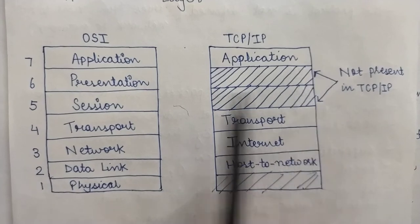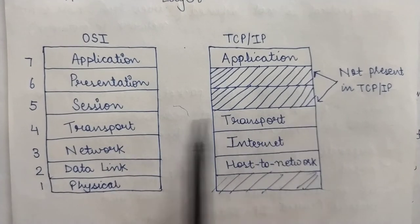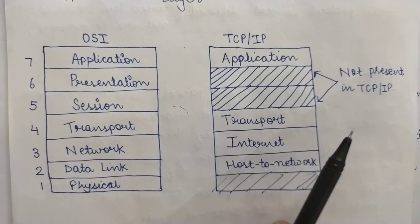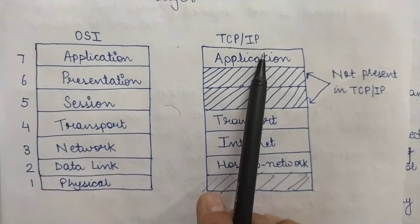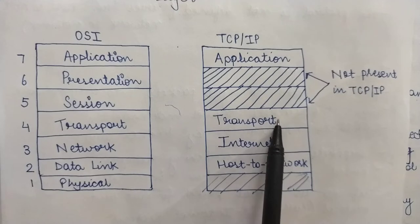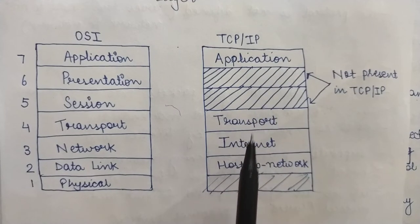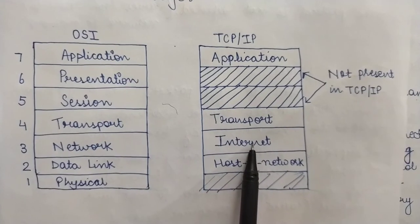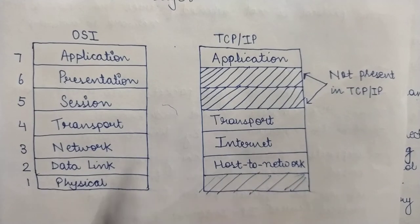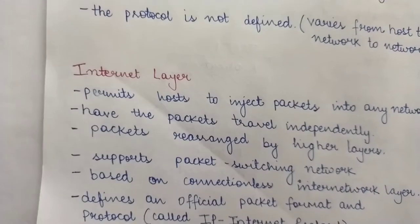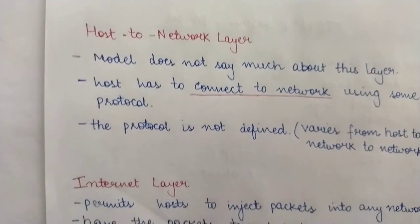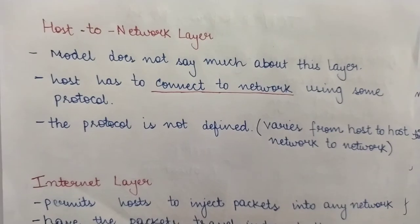The presentation layer and the session layer are not present in the TCP/IP reference model. In total, the TCP/IP reference model has four layers: the host-to-network layer, the internet layer, the transport layer, and the application layer. Now let's look in detail at the functions these layers are performing, starting with the lowest layer first — the host-to-network layer.